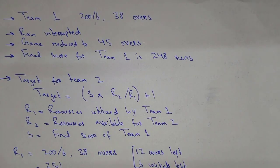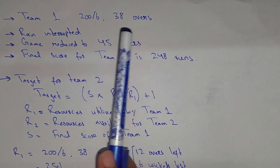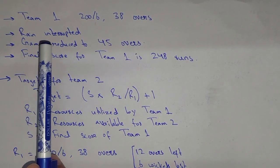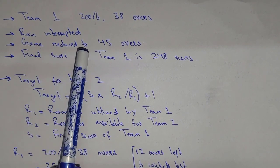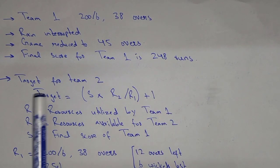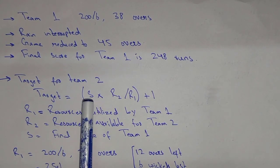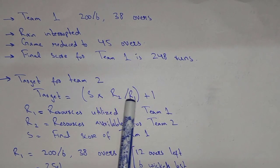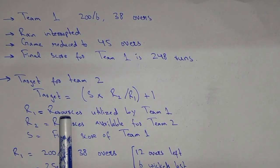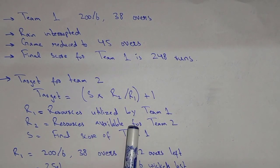Now here is Scenario 2. Team 1 is making 200 runs for the loss of 6 wickets in 38 overs, and then rain interrupts. The game is reduced to 45 overs, and the final score for Team 1 is 248 runs. The target for Team 2 is calculated using the formula: Target = S × (R2 / R1) + 1, where R1 is the resources utilized by Team 1, R2 is the resources available for Team 2, and S is the final score of Team 1.